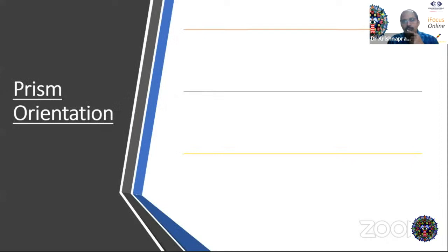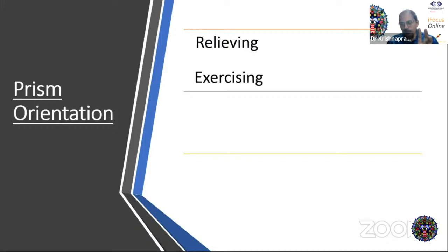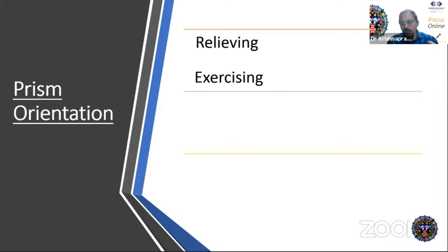Regarding prism orientation — relieving versus exercising: a relieving prism brings two images together, compensating the deviation. If it actually creates tropia, it is called an exercising prism. The most important diagnostic test using prisms is PBCT — the prism bar cover test with loose prisms — the most commonly done test to measure the amount of squint.